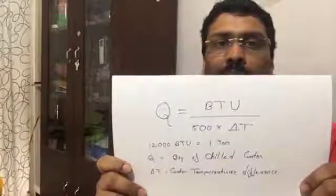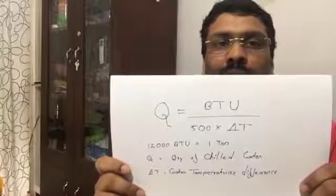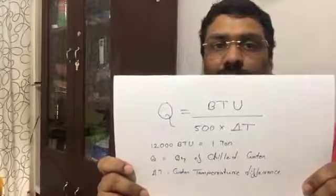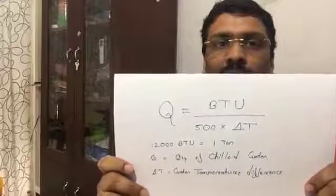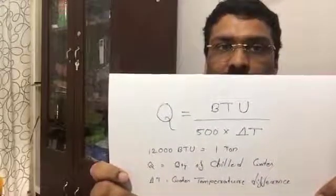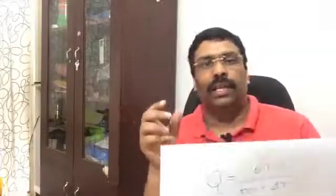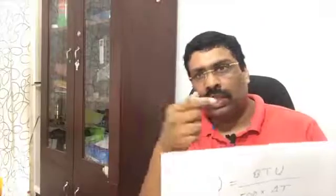BTU — British Thermal Unit. 12,000 BTU is equal to 1 ton, and Q is of course the quantity of chilled water. Delta T means the difference between the supply chilled water temperature and the return chilled water temperature — that is called delta T.